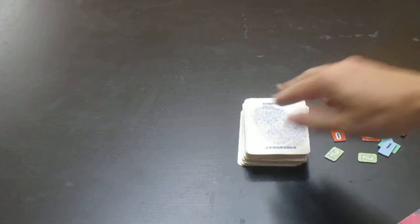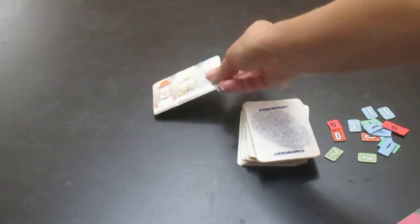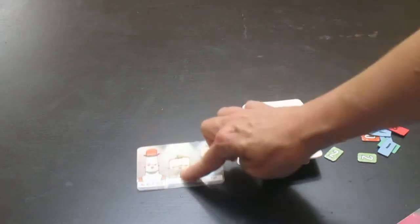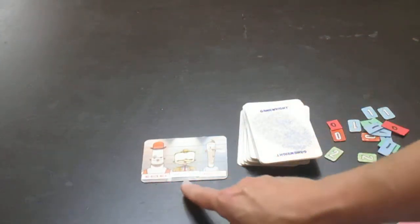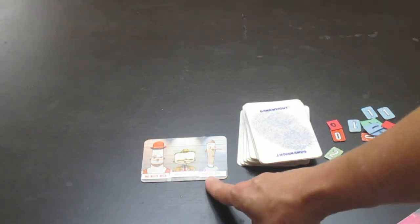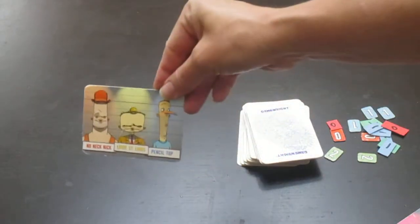Now play begins. Each detective takes a card off the top of the deck and flips it over so everybody can see it. If you notice, we have No Neck Nicky, Louis St. Louis, and Pencil Top as our three suspects.